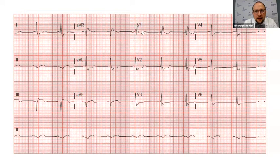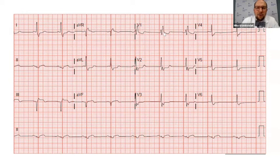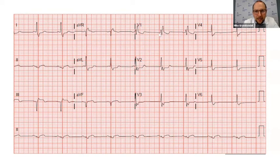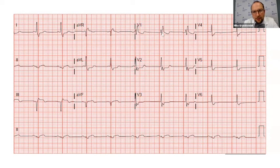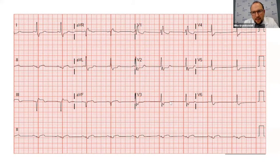Moving to V1, we see a wide QRS complex — more than three boxes, more than 120 milliseconds. This could be a right or left bundle. Since a majority of the QRS complex is above the baseline — it's positive in V1 — this is a right bundle branch block. We see T-wave inversions here. Moving further into the precordial leads, we see some ST depressions, maybe a little bit more, mainly T-wave flattening throughout these leads.